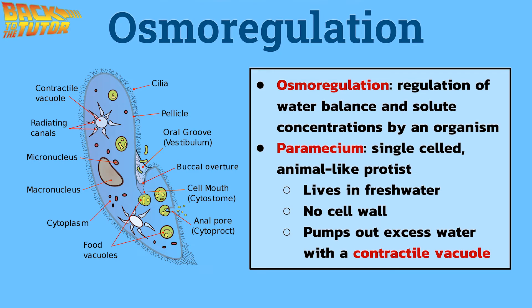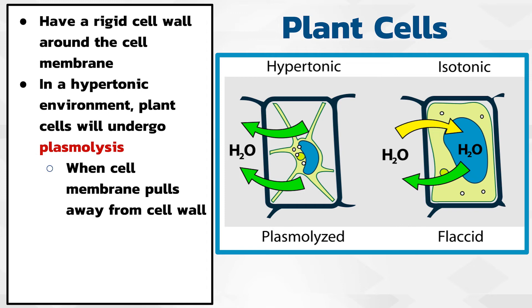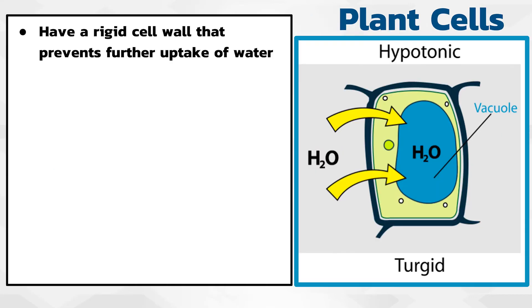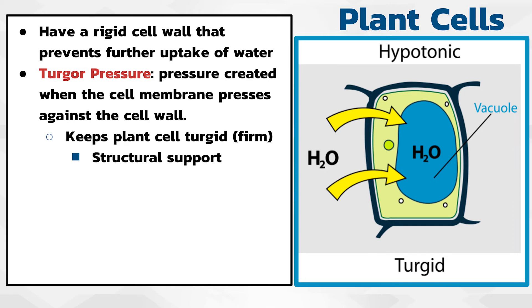Plant cells, by contrast, have a rigid cell wall surrounding their cell membrane. When they are in a hypertonic environment, plant cells will lose water and undergo plasmolysis — the cell's contents will shrivel up and the cell membrane will pull away from the cell wall. In an isotonic environment, the plant cells will be flaccid or limp, as water enters and exits at the same rate. In hypotonic solutions, however, plant cells will not burst, since they have a rigid cell wall that prevents further uptake of water. When water moves into a plant cell, the cell's contents begin to swell and expand, and the cell membrane pushes against the cell wall. Pressure begins to build inside the cell as it fills with water. This back pressure created when the cell membrane pushes against the cell wall is called turgor pressure. Turgor pressure helps to keep plants firm, or turgid, and gives them structural support for things like stems, so plants don't wilt.